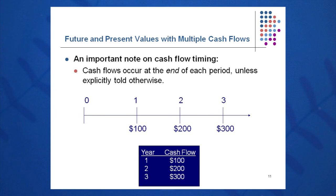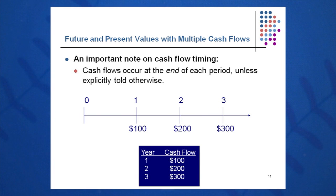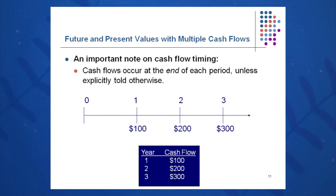An important note about cash flow timing: these cash flows occur at the end of each period. Let me stress that — the end of each period, unless you're told otherwise. You're assuming they come in on December 31st of the year. So we've used future value and present value with different and multiple cash flows, and we're just applying the concepts from session five to figure out these differing cash flows — present value and future value.